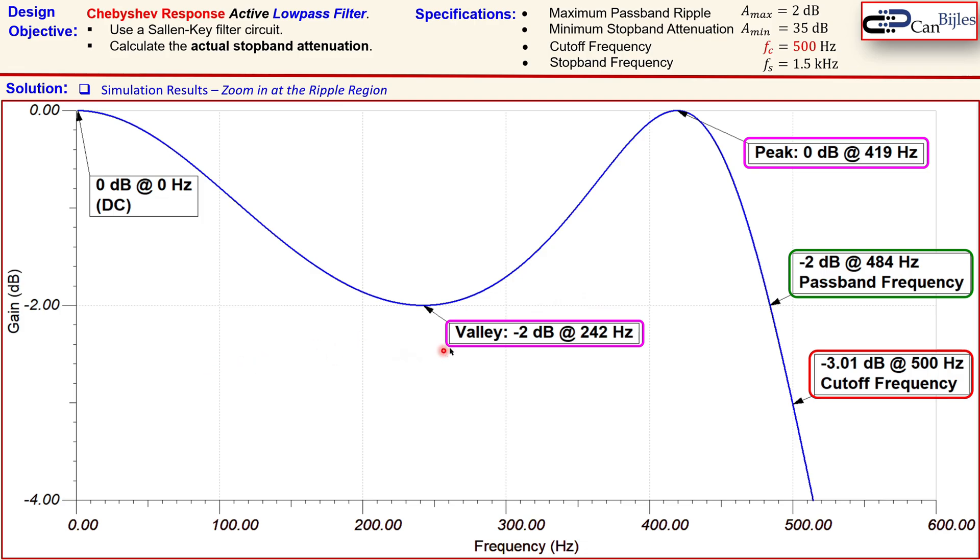Okay, how do we calculate, by the way, the valley and the peak frequencies here? Now, that can be done by using the passband frequency. We have used this formula, and we have defined it as 484 Hz. So, again, here for completeness.